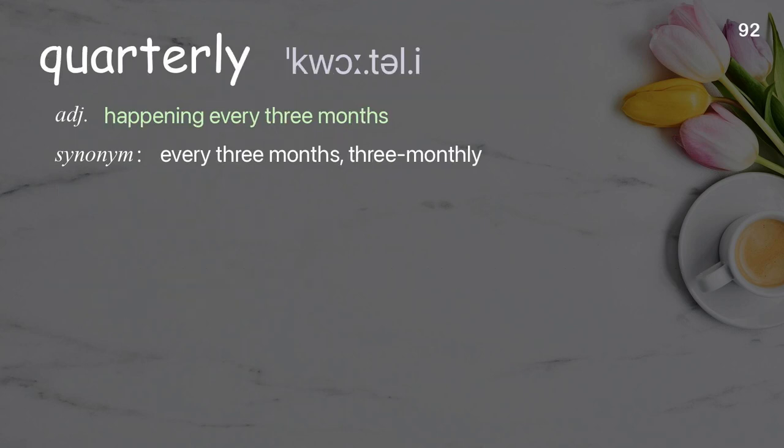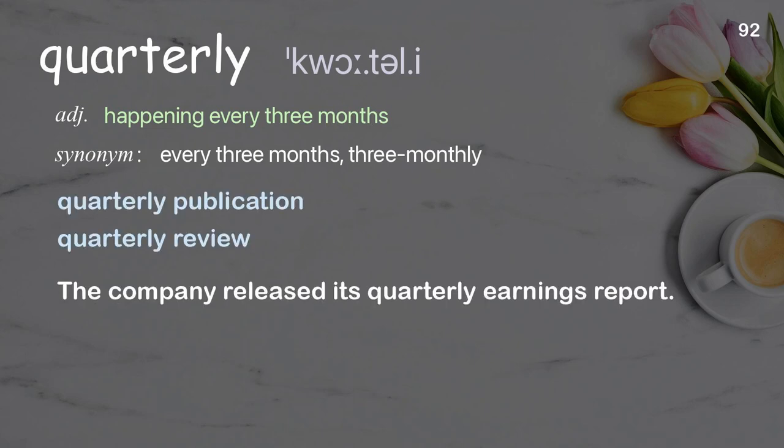Quarterly: Happening every three months. Examples: Quarterly publication. Quarterly review. The company released its quarterly earnings report.